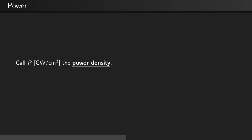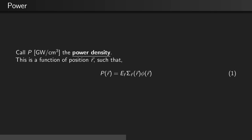Call p the power density. This is a function of position such that p of r equals the energy released from fission, E sub f, times the macroscopic fission cross-section times the flux.